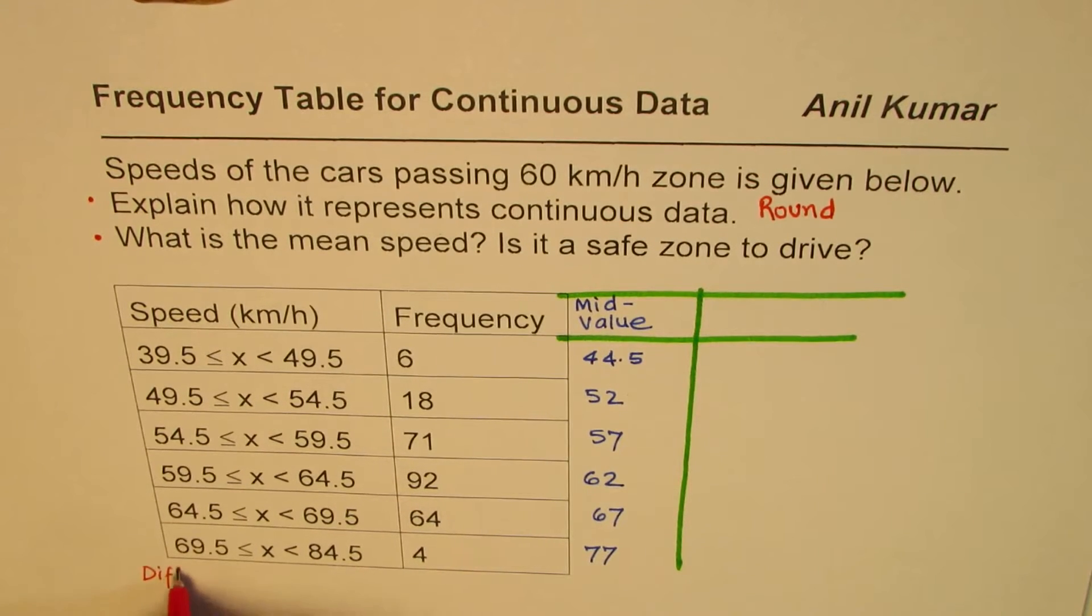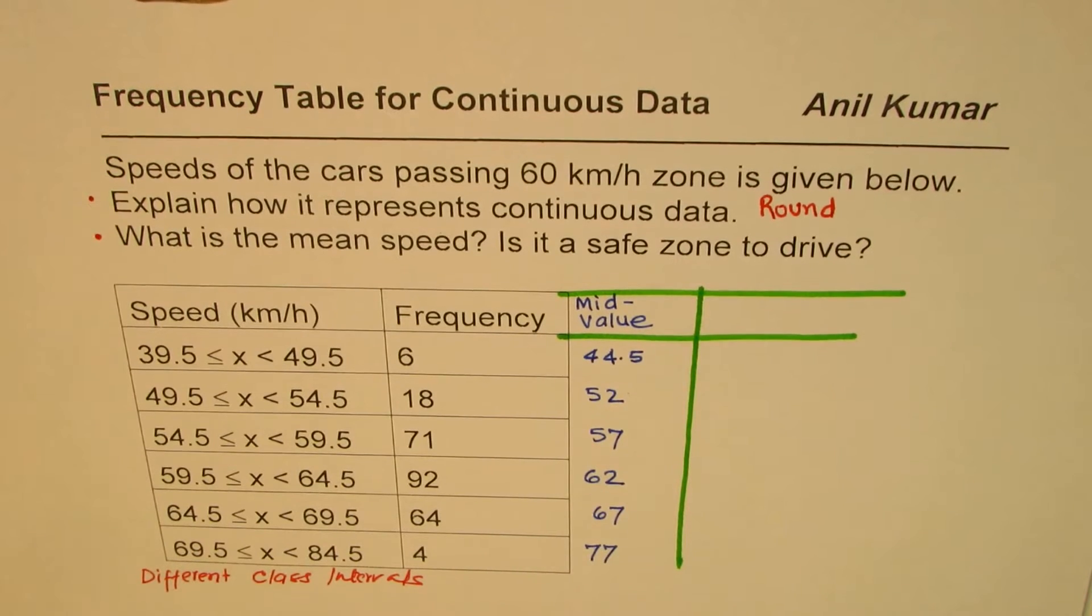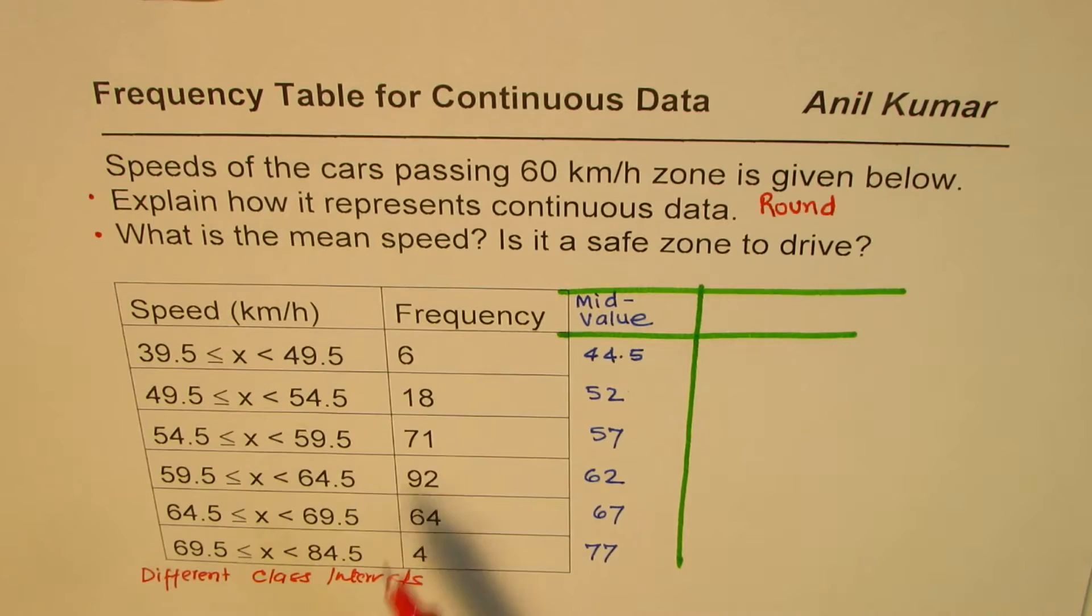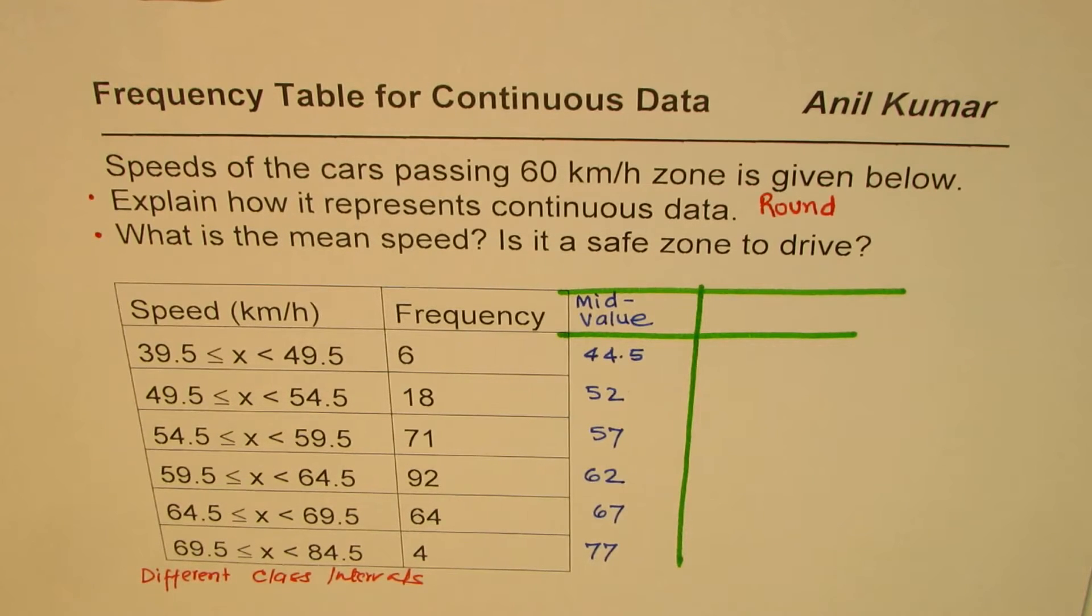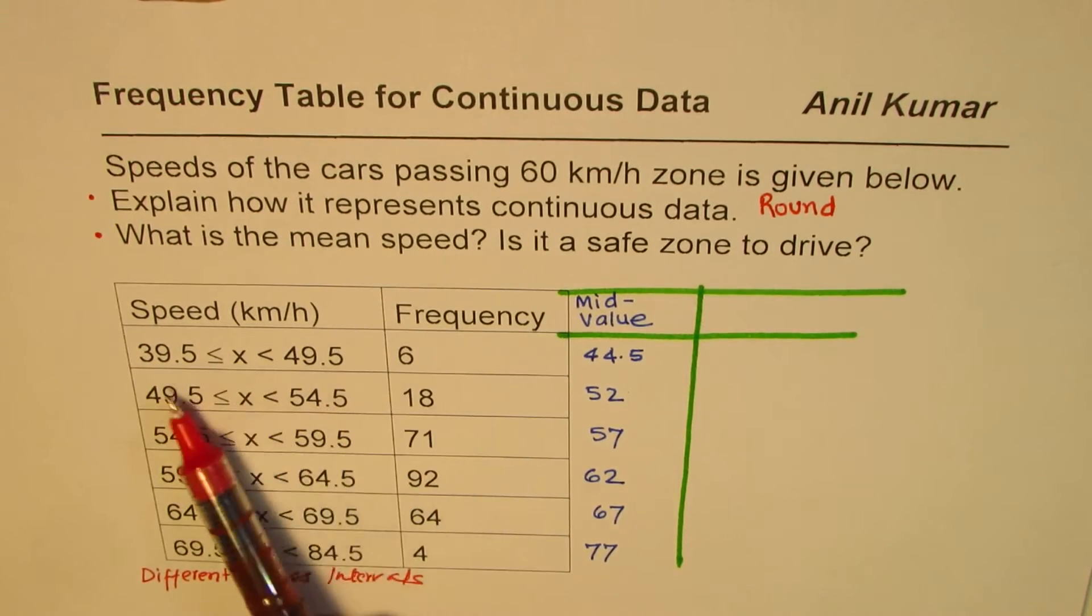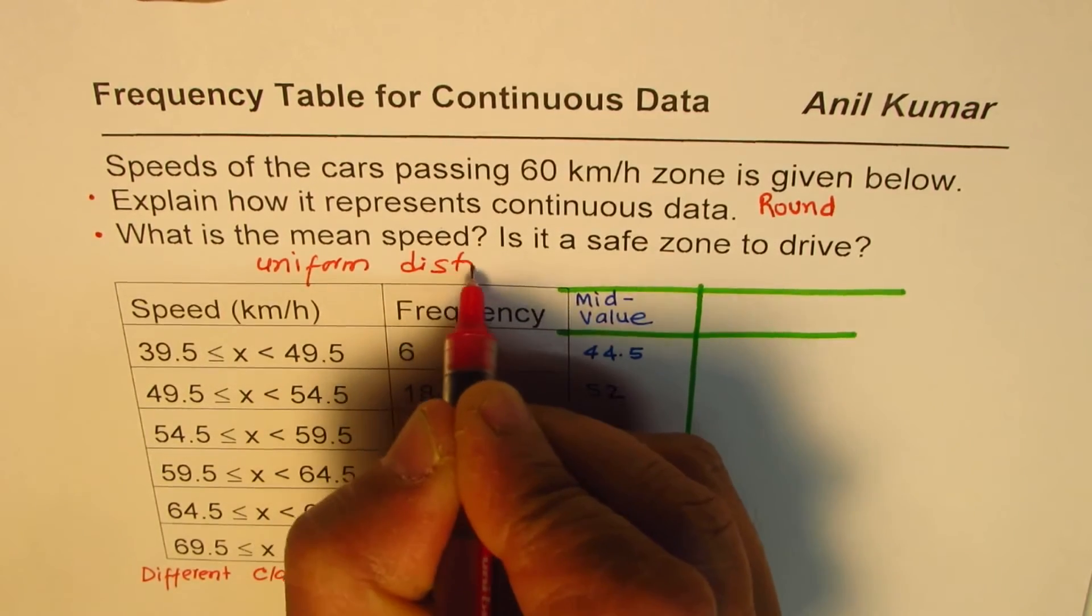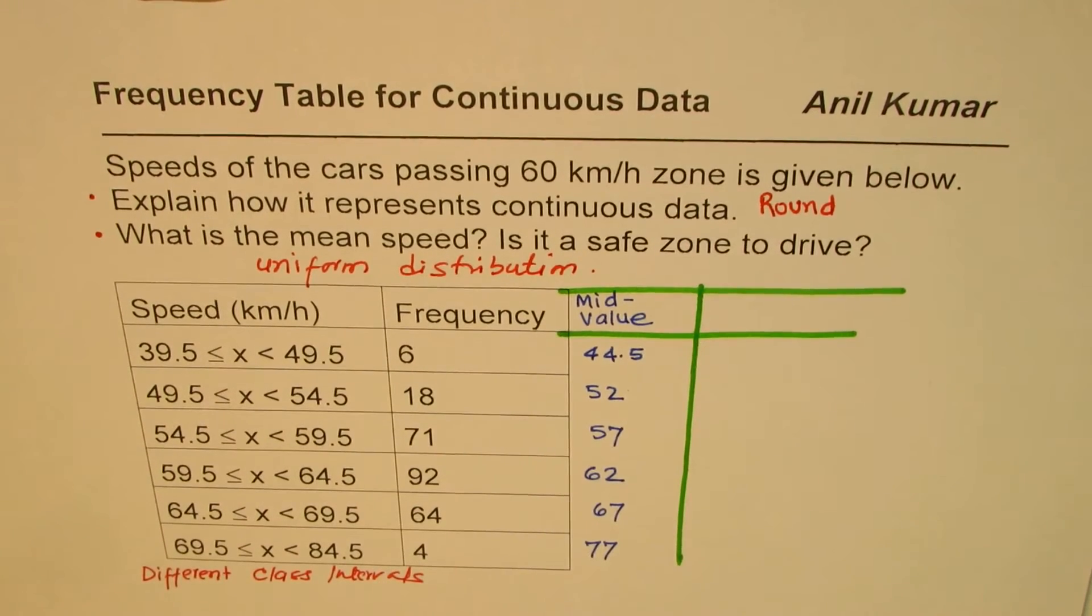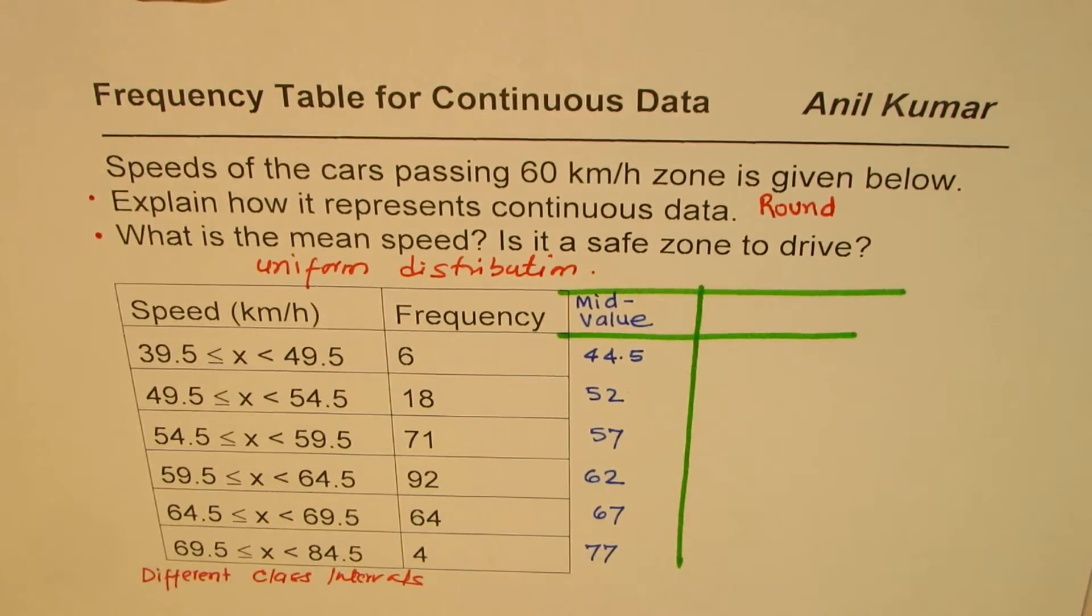At times in grouped data you could have different class intervals. You'll notice the frequency associated with higher intervals is much lower, so it makes sense to sometimes create classes with different intervals. We found the mid values and we're assuming uniform distribution, which is always our assumption when working with grouped data. Now let's find the product of mid value with frequency.